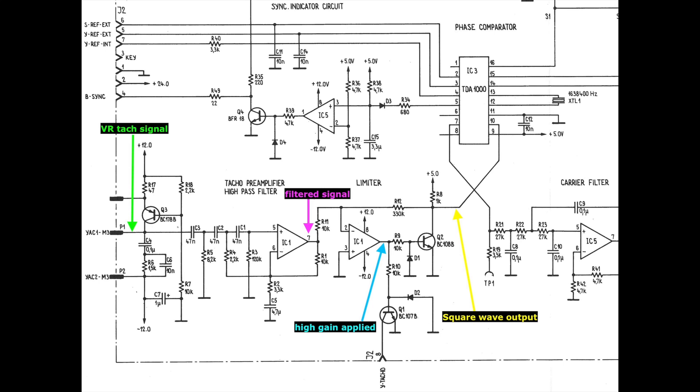After the constant current section, the VR signal is stripped of DC and passively high-pass filtered via C3 and R5. Then it's actively filtered using the first op-amp in the IC1.